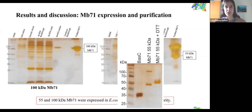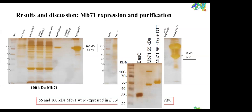The questioner clarified that both the DTT lane and the standard lane had also been boiled. The explanation offered was that boiling a membrane protein causes unfolding, which affects migration in the gel — this is normal behavior. The questioner accepted the explanation and congratulated the presenter again on the work.